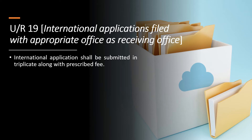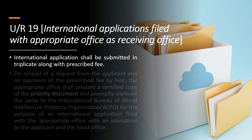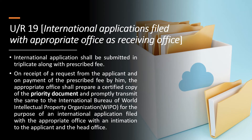A PCT application can also be filed directly at the International Bureau and is usually filed online. On receipt of a request from the applicant and on payment of prescribed fees, the appropriate office shall prepare a certified copy of the priority document and promptly transmit it to the International Bureau of the World Intellectual Property Organization or WIPO, for the purpose of an international application filed with the appropriate office, with an intimation to the applicant and the head office.